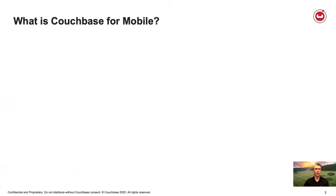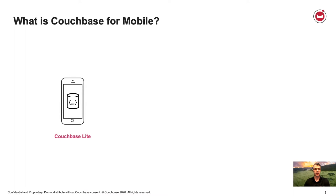So what is Couchbase for mobile? It's comprised of three components. First is Couchbase Lite — our lightweight document database that can be deployed in edge devices. Typically those are phones or tablets — Android, iOS, Windows — and we even have pure Java flavors of Couchbase Lite now, so you've got a lot of flexibility in where you can deploy it.